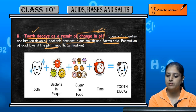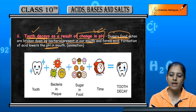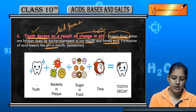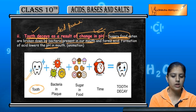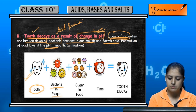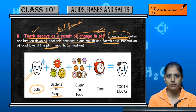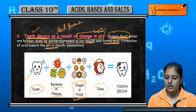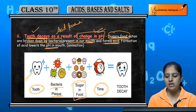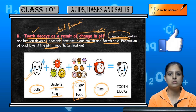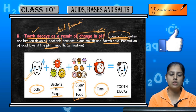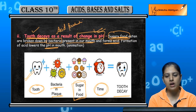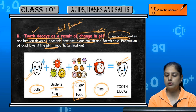By eating more sugary foods, acid production will increase. There is bacteria in the plaque which already forms on teeth. When you eat sugar-containing food and do not address it over time, there will be tooth decay. Bacteria break down sugar and produce acid, therefore pH decreases in the mouth and tooth decay occurs.